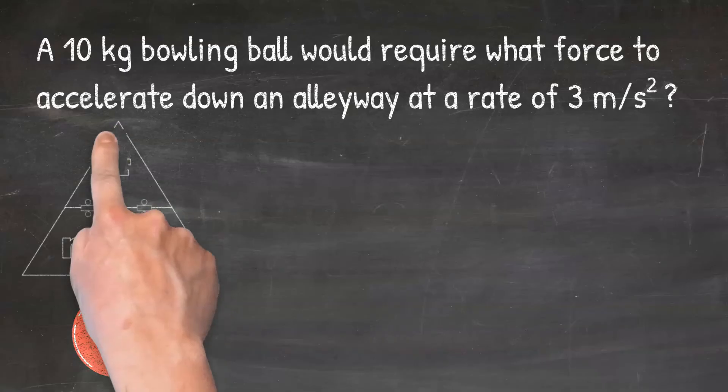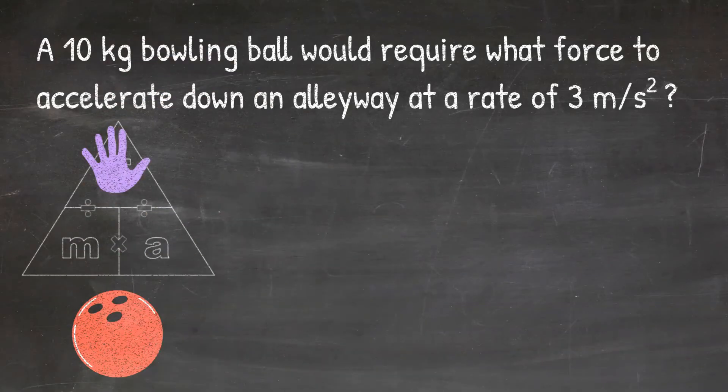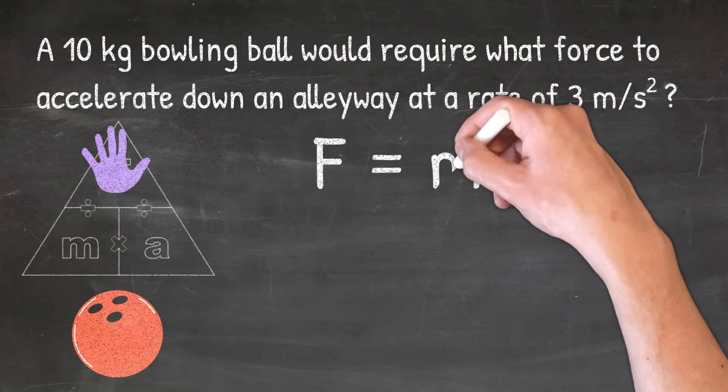So in my triangle, I'm going to cover up the letter F and that will tell me to do mass times acceleration. So now that I know that, I can write F equals MA.